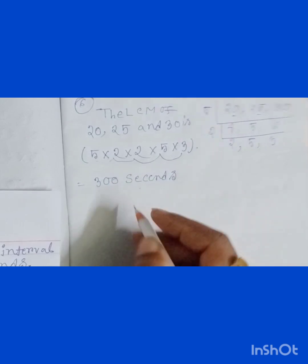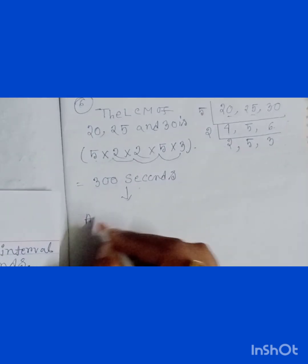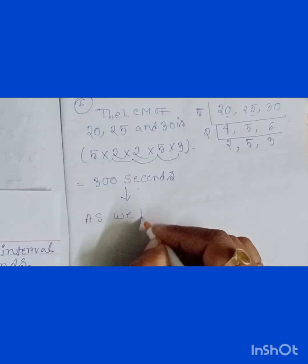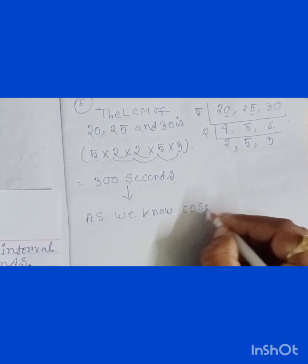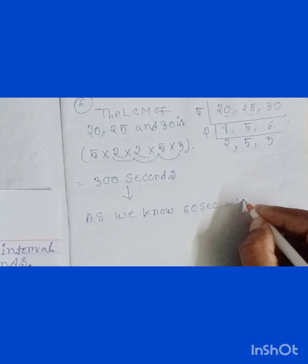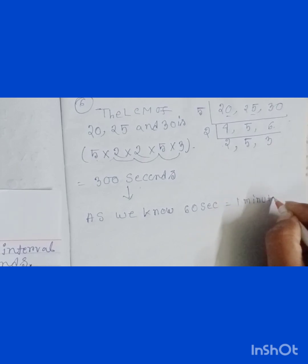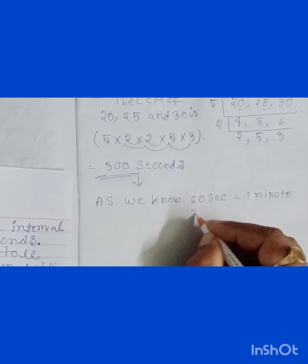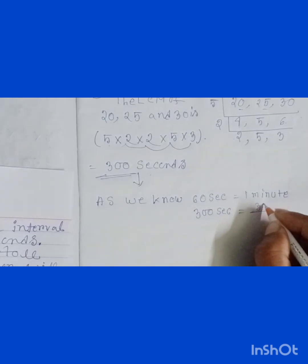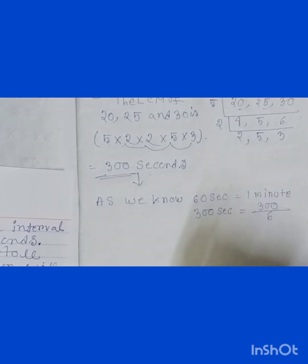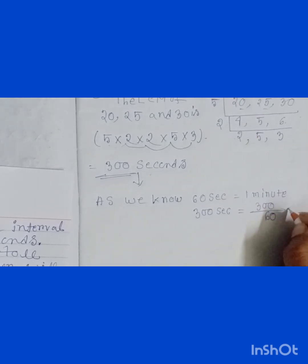As we know, 60 seconds equal to 1 minute. So student, 300 seconds will be equal to how many minutes? Here I am writing 300 seconds equals 300 divided by 60. If we divide 300 by 60, then we get quotient as 5, that means 5 minutes.